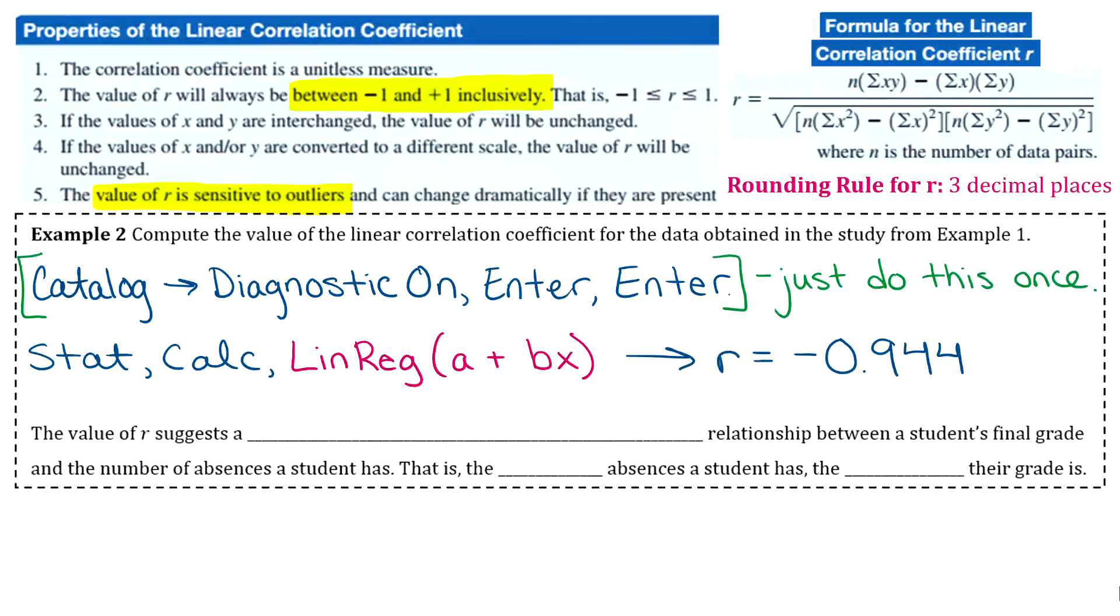And then from that value, that's going to kind of suggest to us what relationship there might be. So negative 0.9 is definitely a strong relationship. And then it's negative because r is negative. So the value of r suggests a strong negative linear relationship. We know it's linear because we did our scatter plot in the beginning. So strong negative linear relationship between a student's final grade and the number of absences a student has. And hopefully that makes sense that the more absences a student has, the lower their grade is.